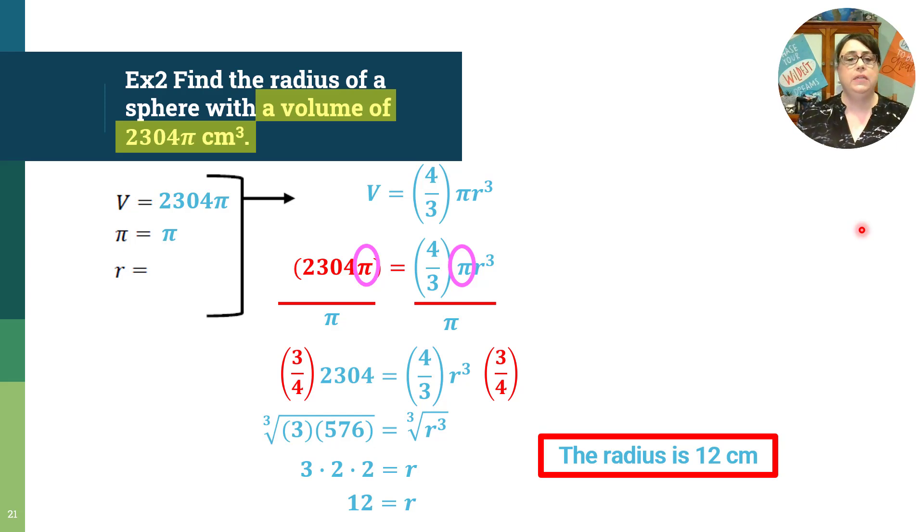This is the whole reason we set up everything with writing out our formula first, because we can chip away at the things we know. If you remember to use masking, where you cover up the things and you just do that problem, that line you're working on right now, then you don't get so overwhelmed. I know all of you know how to do the cube root of this number. I know you can divide by pi. Just chip away one line at a time.